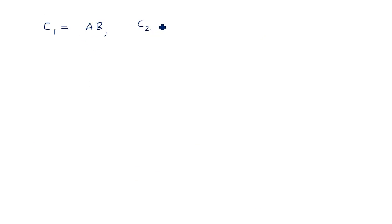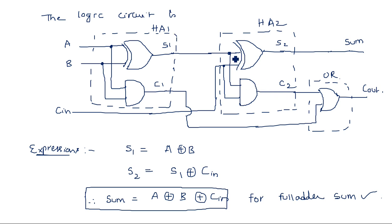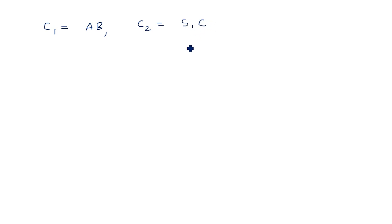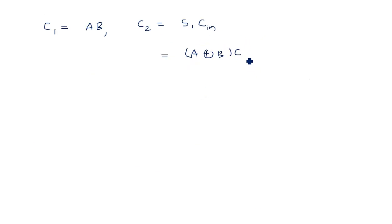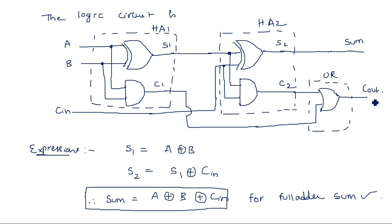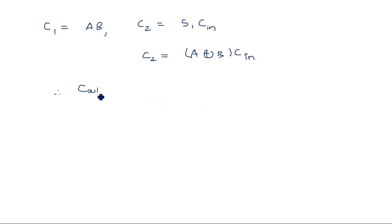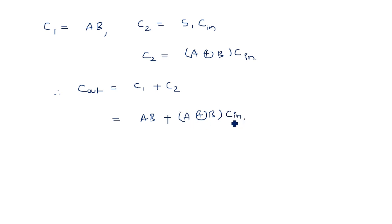Now for carry: C1 = A · B (from the AND gate of the first half adder). C2 = S1 · Cn = (A XOR B) · Cn. The overall carry-out: Cout = C1 OR C2 = C1 + C2 = AB + (A XOR B) · Cn.